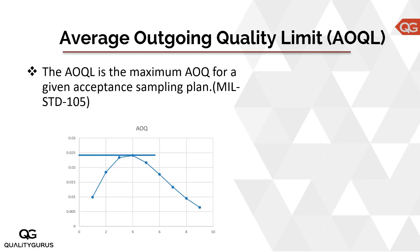Previously we talked about AOQ, or Average Outgoing Quality. We took cases where we had lots with 1% defective, 2% defective, 3% defectives, and so on. Based on these lots, we calculated what the average outgoing quality would be after passing through this sampling plan, and plotted a graph showing AOQ from 1% up to 9%. Now if you look at the peak of this graph...